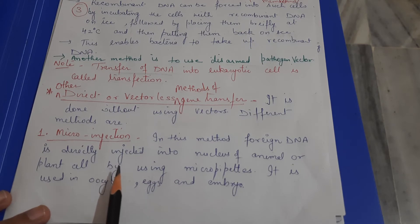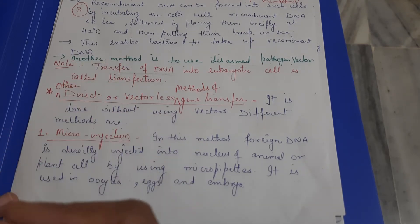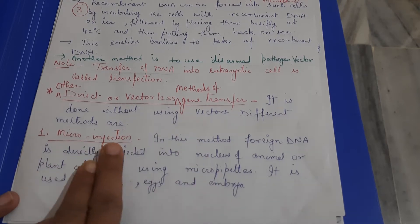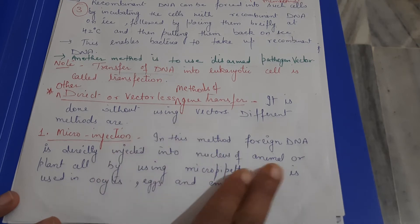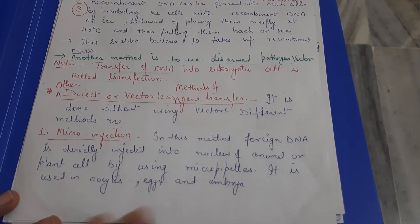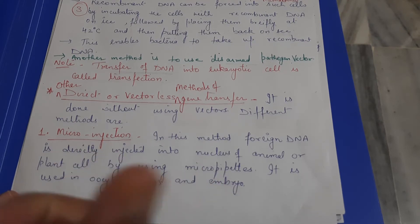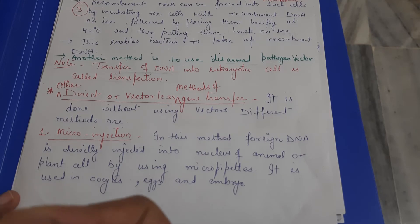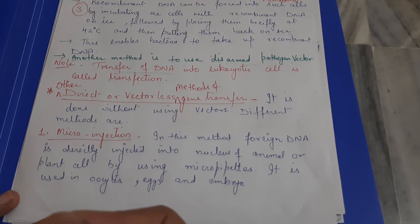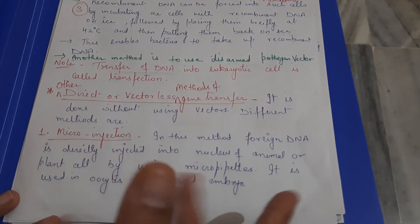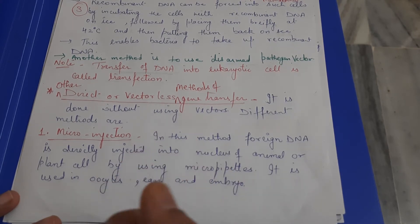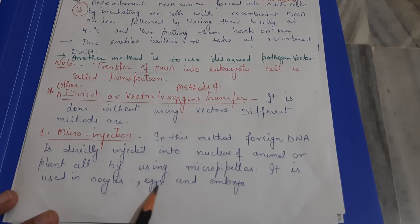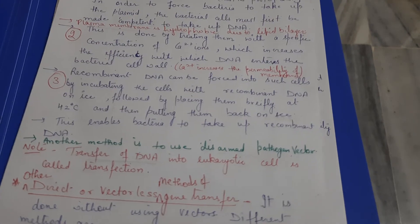The first vectorless method is micro-injection. Foreign DNA is directly injected into the nucleus of animal or plant cells using micro-pipettes. Micro-pipettes handle very small quantities — microliters. This method is mainly used for transfer of DNA into animal or plant cells, and is specifically used for oocytes, eggs, and embryos where a gene of interest needs to be introduced.